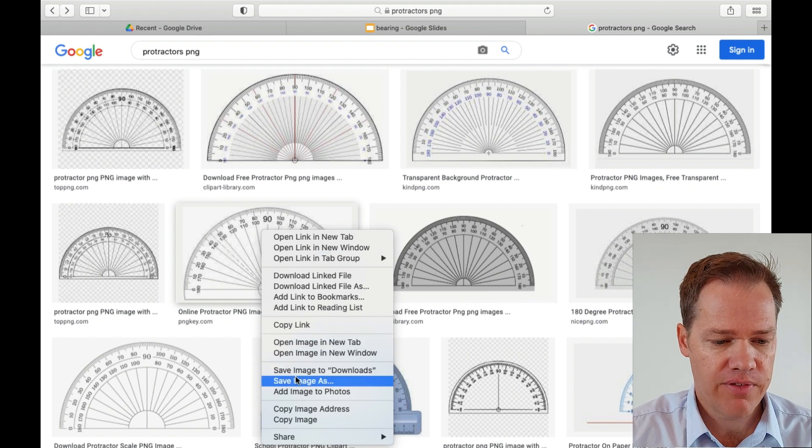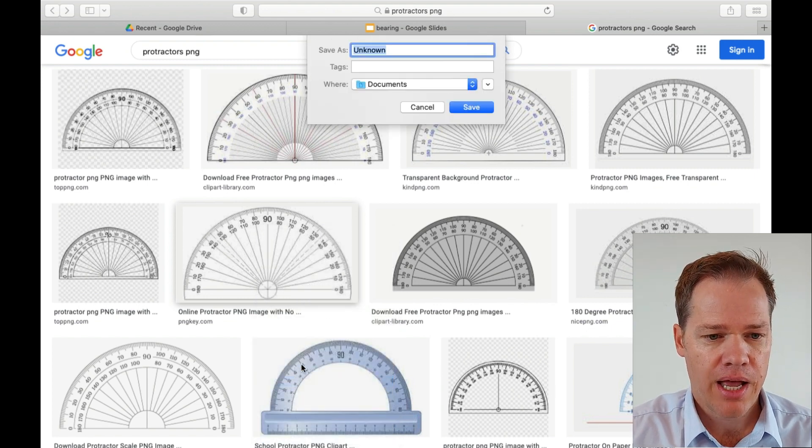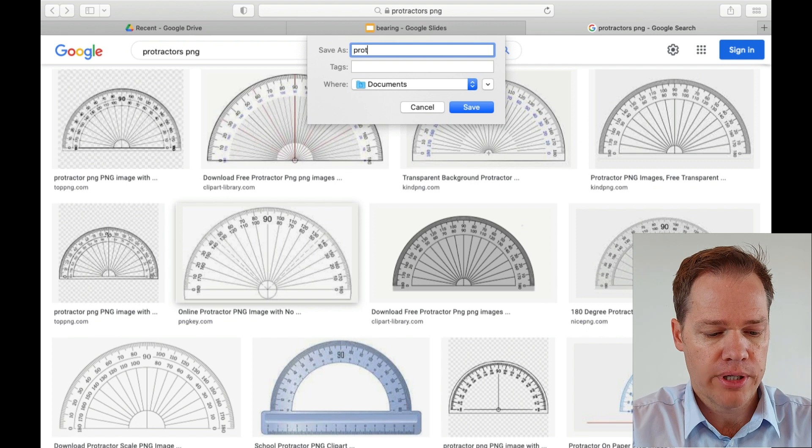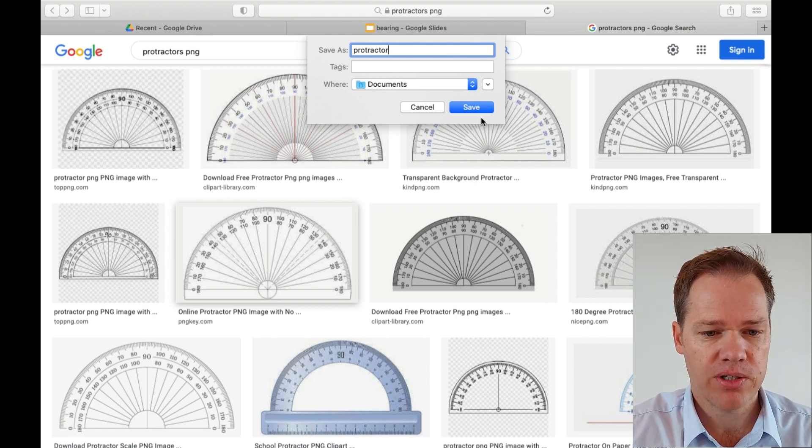So you right-click, you say save image as, and then I'll call it protractor. I have also saved a few others, but that's fine. I'm going to save it in my documents folder.